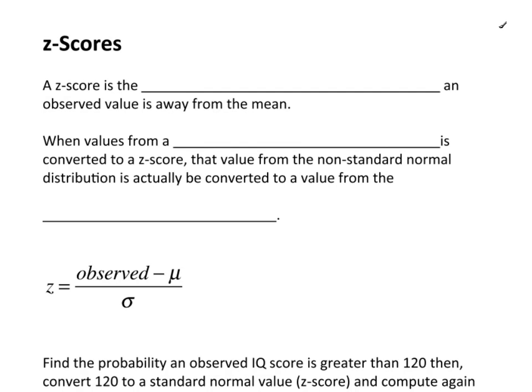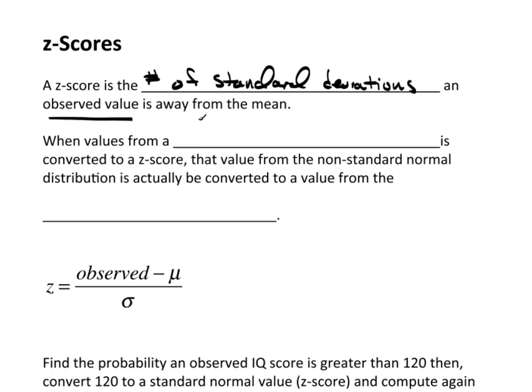I want to talk now a little bit about the idea of z-scores. I've mentioned z-scores several times without really formalizing it, and that's what we want to do now. A z-score is the number of standard deviations an observed value is away from the mean. So a z-score is a distance.